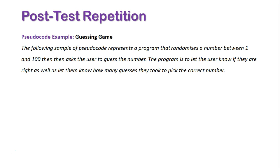If we're going to look at an example of pseudocode, we're going to look at this guessing game scenario. The following sample of pseudocode represents a program that randomizes a number between 1 and 100, and then asks the user to guess the number. The program is to let the user know if they are right, as well as let them know how many guesses it took to pick the correct number.